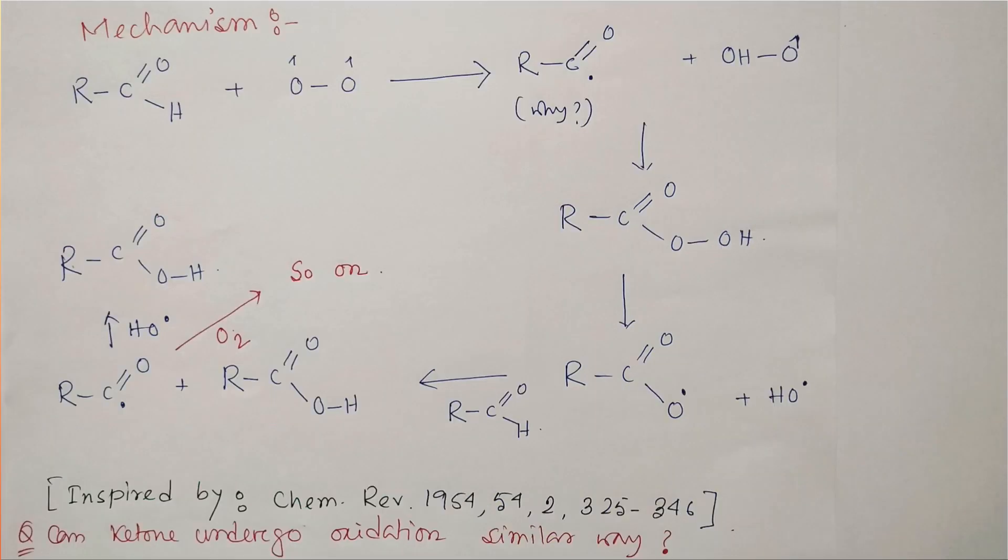Okay, so now let us discuss the mechanism. As I told you, oxygen is a diradical, so the reaction happens through a radical process. When we move a single electron in a radical mechanism, we represent it this way with a half arrow. This is called a fishhook arrow—this is the tradition to represent radicals. One radical, one electron, that's why half arrow.